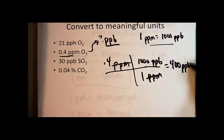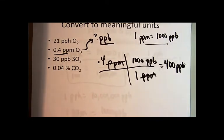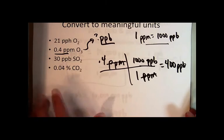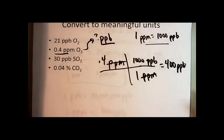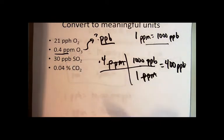Alright, let's see here. Okay, what about the 30 parts per billion? That's a nice representation of the sulfur dioxide concentration. What about this 0.04 percent carbon dioxide, can we do better there?